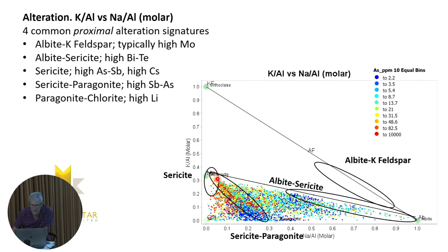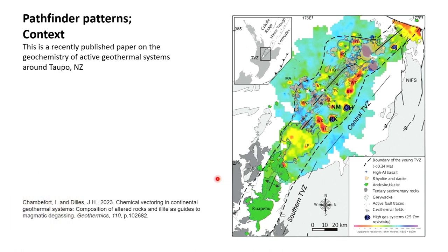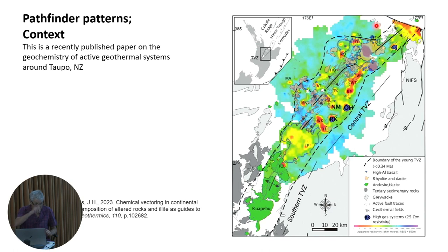This is the Golden Mile dataset on a molar ratio diagram, colored in 10 equal ranges of arsenic contents. You can see the high arsenic up near the muscovite node. Just for context, here's a really good paper by Isabel Chamberfort — she did a lot of geochemical work on active geothermal systems in New Zealand, in the Taupo Volcanic Zone. Isabel and John Dillis looked at these geothermal systems and measured all the mineralogy down the production well holes and all the trace element chemistry.